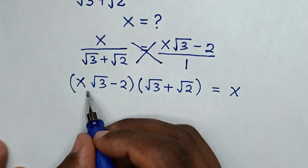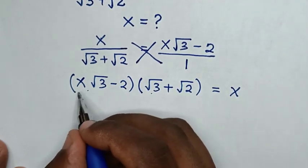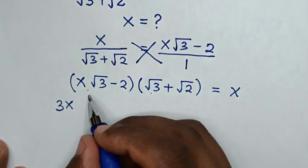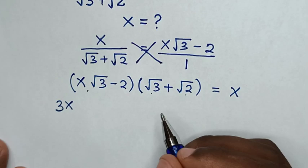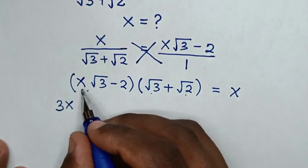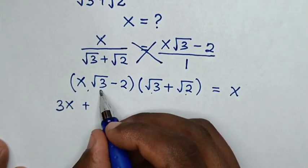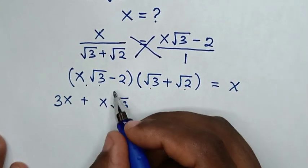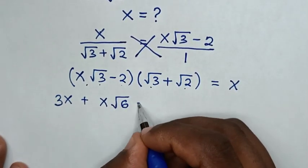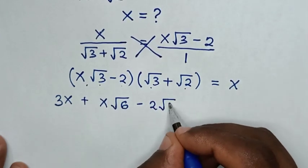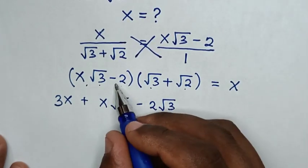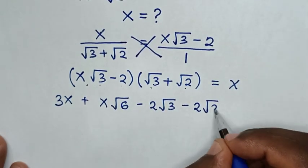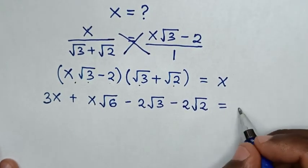Then in the next step, expanding: square root of 3 times square root of 3 is 3, so it will be 3x. Then positive x square root of 3 times square root of 2 is square root of 6. Then negative 2 times square root of 3 is negative 2 square root of 3. Then negative 2 times square root of 2 is negative 2 square root of 2. This is equal to x.